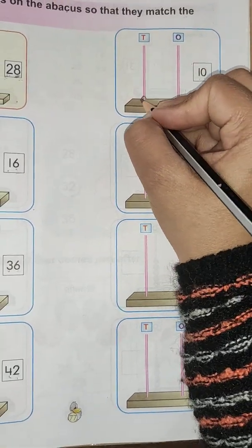Next one is 50. Again in place of ones, number is 0, means nothing. Where there is 0, we don't draw any beads, because 0 means nothing. And 5 is in place of tens. So we will draw 5 beads in place of tens: 1, 2, 3, 4, 5.